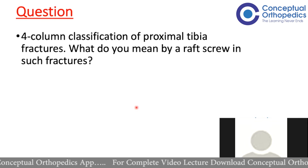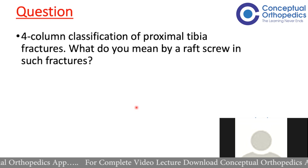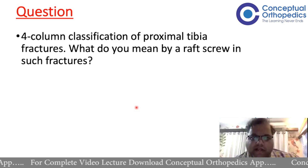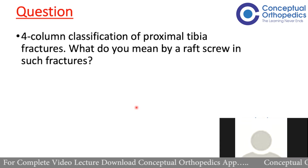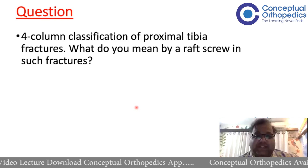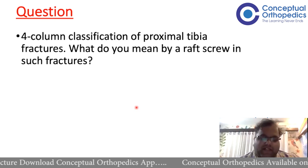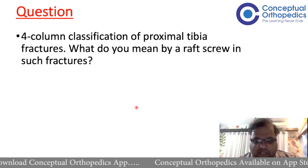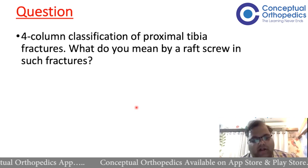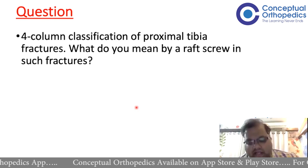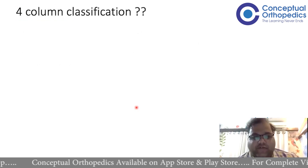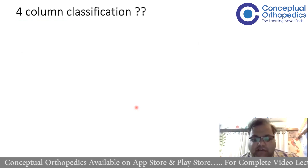One student confirmed: in the proximal tibia fracture lecture, four-column was already explained, so they wrote the four-column — medial, lateral, postero-medial, and postero-lateral. That is exactly the confusion. Many students wrote Lua's three-column and classified posterior as postero-medial and postero-lateral, but let us just see how that is exactly not what the separate four-column classification is — that's the ambiguity of this question.